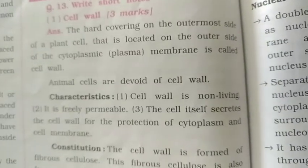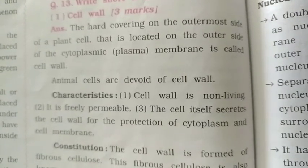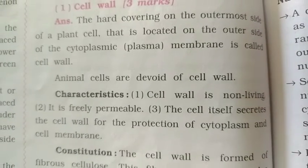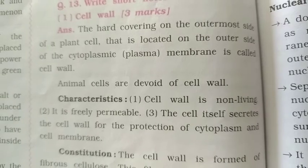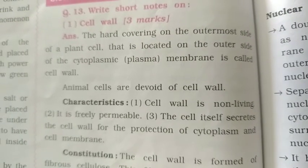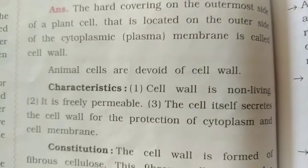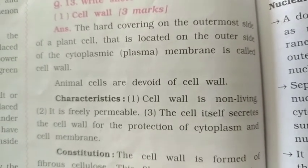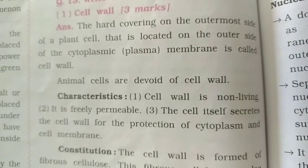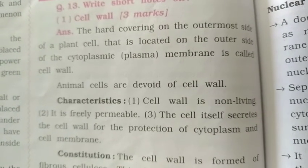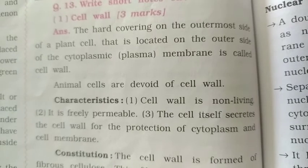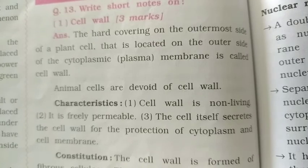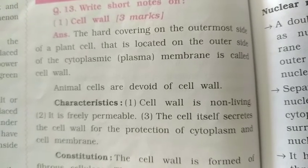Characteristics of the cell wall: First, cell wall is non-living. Second, it is freely permeable. Third, the cell itself secretes the cell wall for the protection of the cytoplasmic and cell membranes.